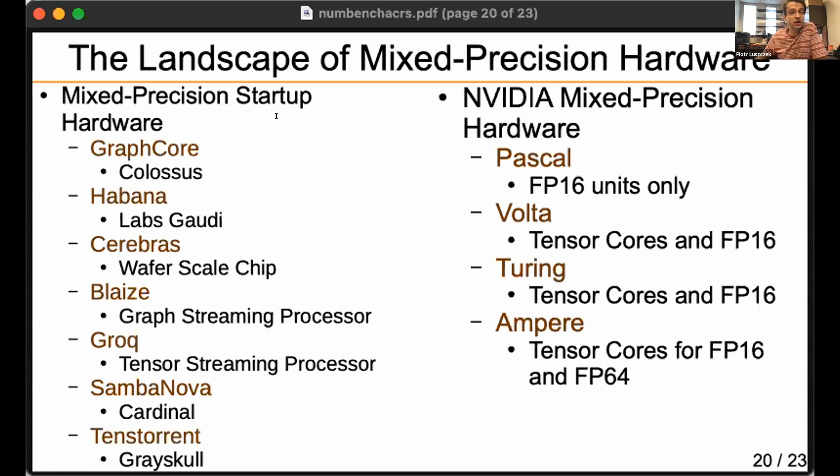Jim already mentioned there are a lot of startups that try to do much more efficient machine learning directly in hardware. Here is just a laundry list of ones that I happen to get reliable news reports about. Some of them you probably heard, and some of them are actually already deployed and doing science at various locations. We have GraphCore, Habana, Cerebras, Blaze, Groq, SambaNova, and Tenstorrent. They all have this mixed precision way of doing things, and the more limited and faster the precision, the better.